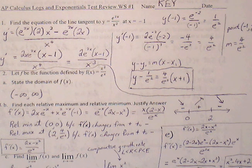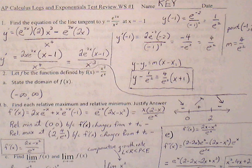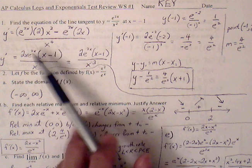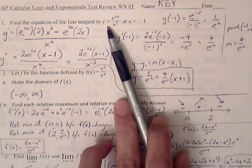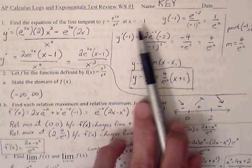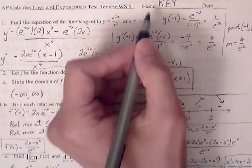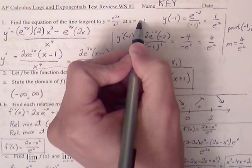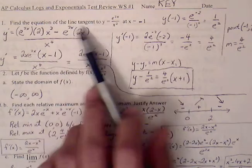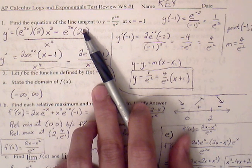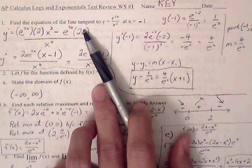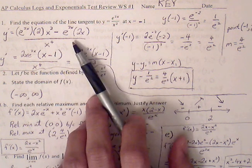This is the logs and exponential test review worksheet number one. Let's start off with number one: find the equation of the line tangent to f(x) = e^(2x) / x² at x = negative one. To find the equation of the tangent line, we need to first find the derivative so we can identify the slope. Once we have the slope and the ordered pair, we can find the tangent line equation.